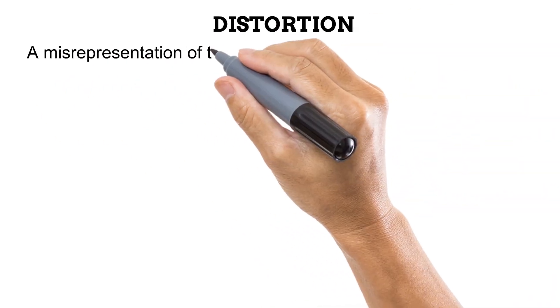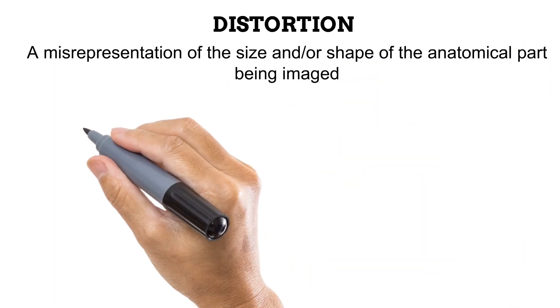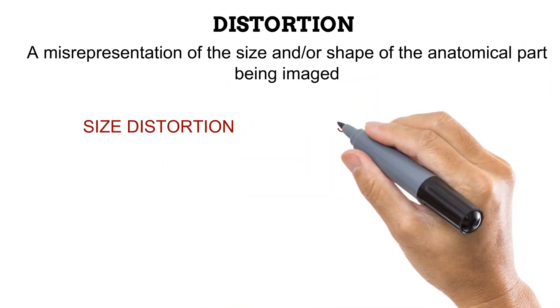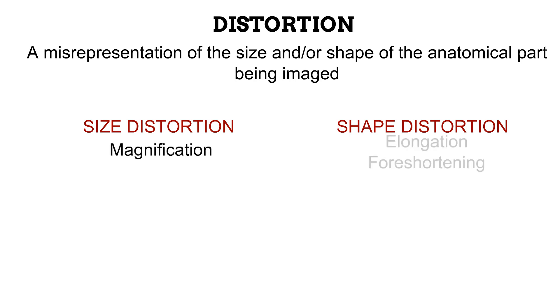Radiographic distortion is a misrepresentation of the size and/or shape of an anatomy that is being radiographed. This implies that there are two types of radiographic distortion: size distortion and shape distortion. Under size distortion, we commonly have magnification. While under shape distortion, we either have elongation or foreshortening.